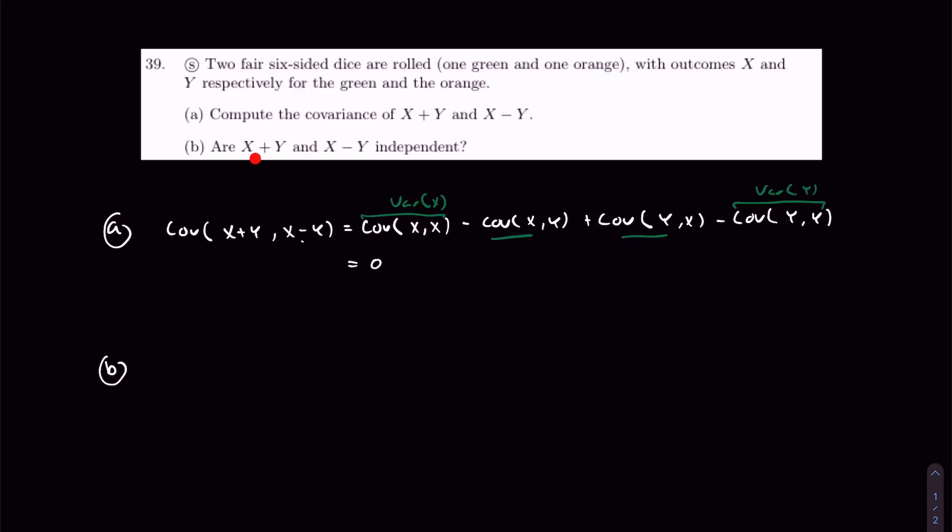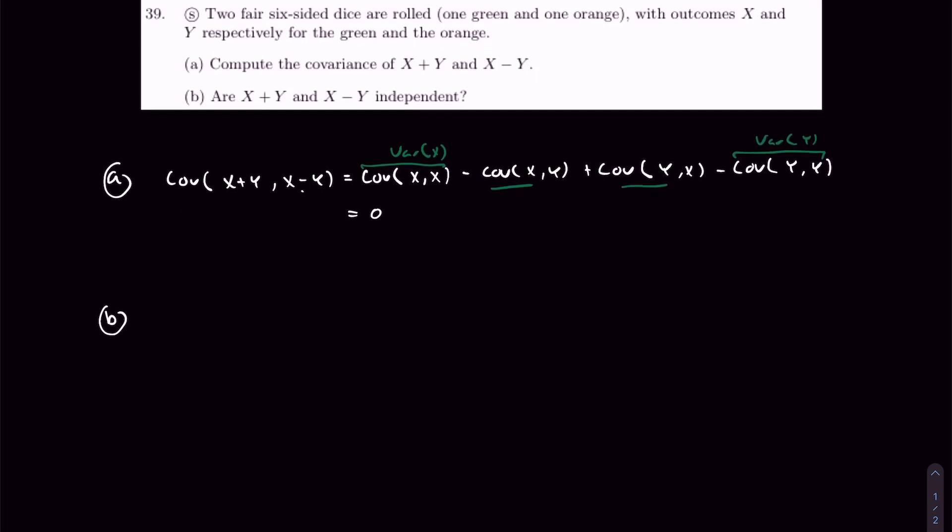When we observe an outcome in one, we can infer what the outcome of the other should be. One way to see this is to write X+Y and X-Y, then use some extreme cases and figure out if that indeed yields dependence.